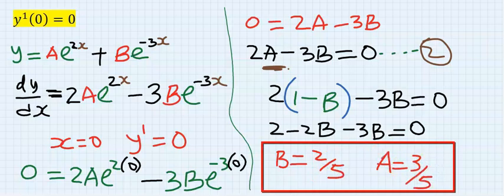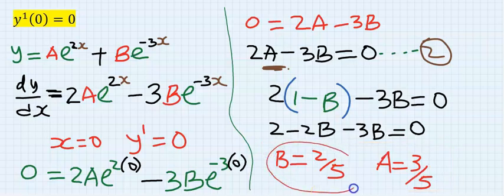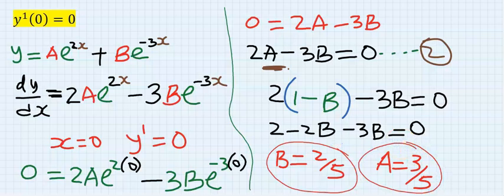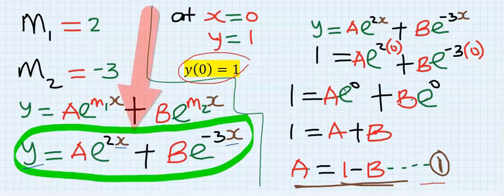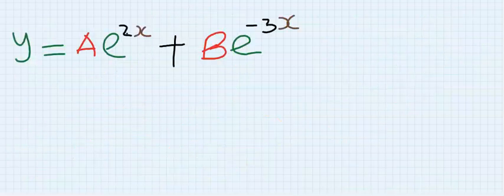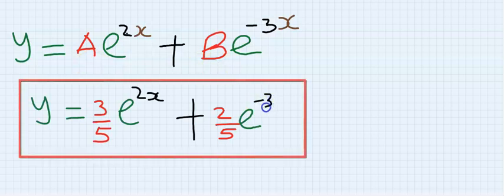Step number eight: I will go to my final general solution. I will replace a and b, which is in this general solution. Hence, I will substitute for a and for b. And this becomes my final answer.